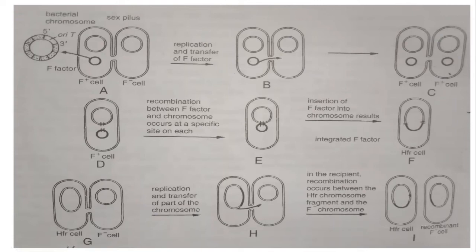This process converts the recipient cell into a donor cell, and now this donor cell can also conjugate with other recipient cells. In some cells, the F-plasmid integrates into the bacterial chromosome, and such cells are called high-frequency recombination (HFR) cells. This integration occurs at specific sites in the bacterial chromosome.